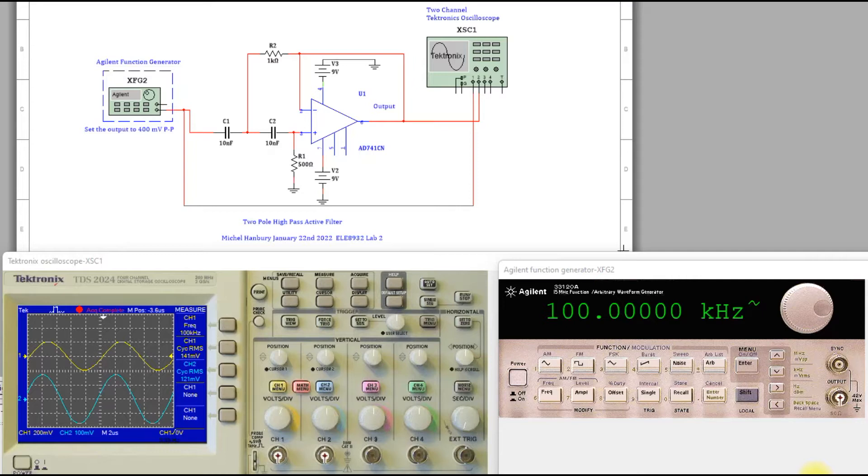You can notice right away that my input frequency is 100 kilohertz coming into the circuit and I'm using two 10 nanofarad capacitors, 1k resistor, and a 500 ohm resistor. So right now the input is at 100 kHz.